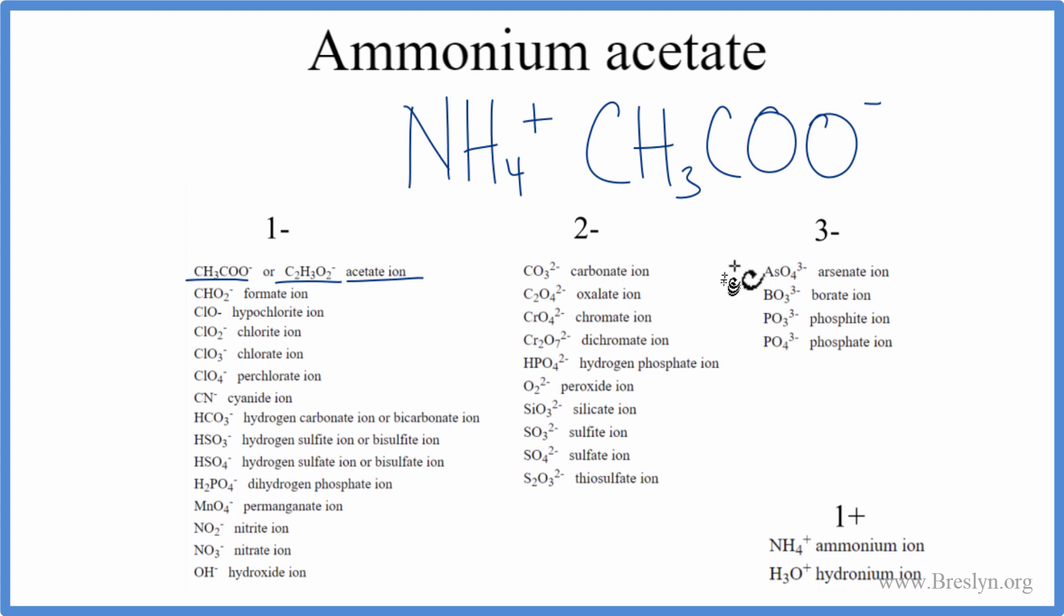At this point, this is the formula for ammonium acetate. We have the ammonium ion with a positive charge and the acetate ion with a negative charge. These will cancel out, so the net charge will be zero. That makes this the formula for ammonium acetate. Let's get rid of the charges and clean it up.